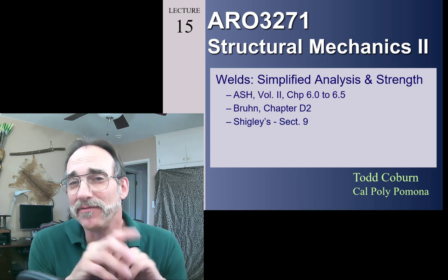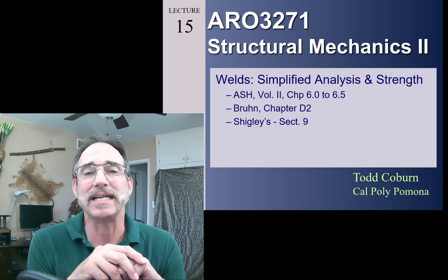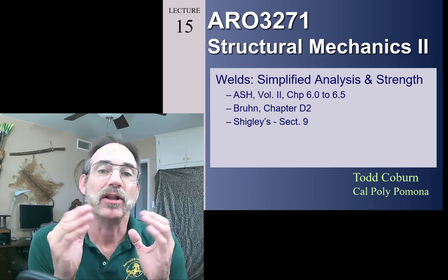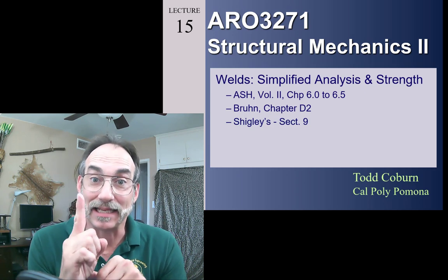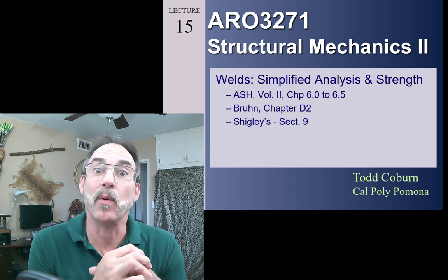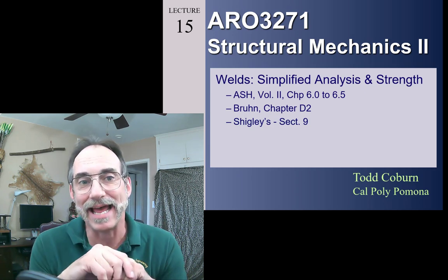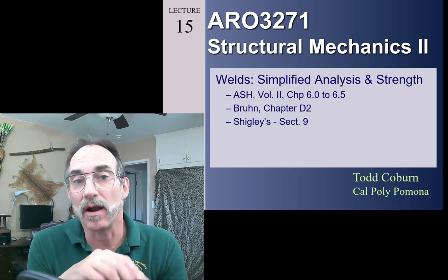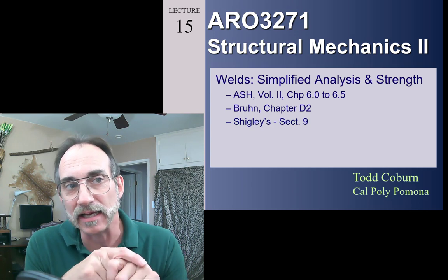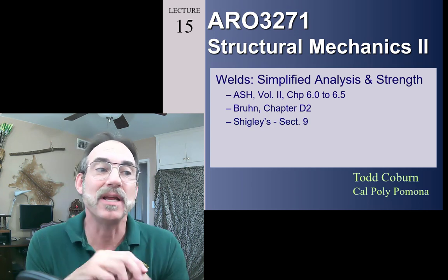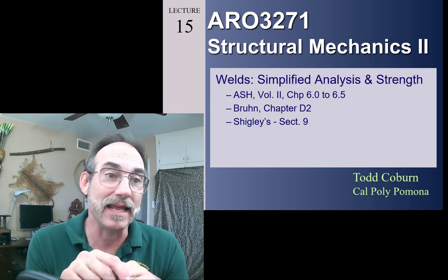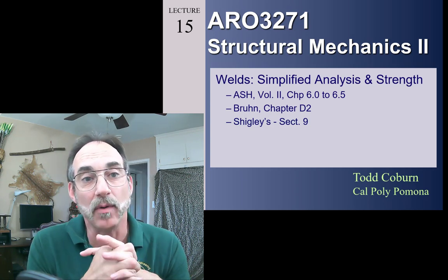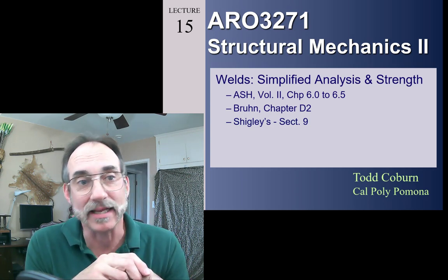What we're going to cover in this simplified piece is: if we have a simple weld that follows really simple geometry — like a line weld, a snakebite weld, or a C weld — we can use some approximate formulas. They're rather close; we're just going to neglect one term, which will allow us to calculate the torsional or bending properties of the weld much more rapidly.